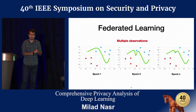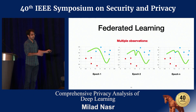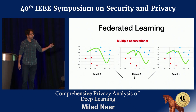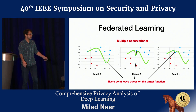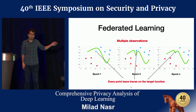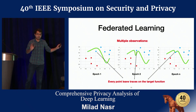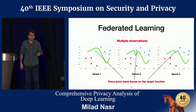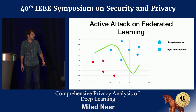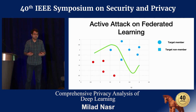The first difference between a federated learning setting and a normal learning setting is that you have multiple observations of the training model parameters. You can observe how your model changes its parameters over rounds, which allows you to find out that there is a specific point in the training dataset of a specific collaborator. We go one step further and want to design an active attack: if the attacker is one of the participants in the federated learning setting, they can influence the learning to leak more information about the training data.